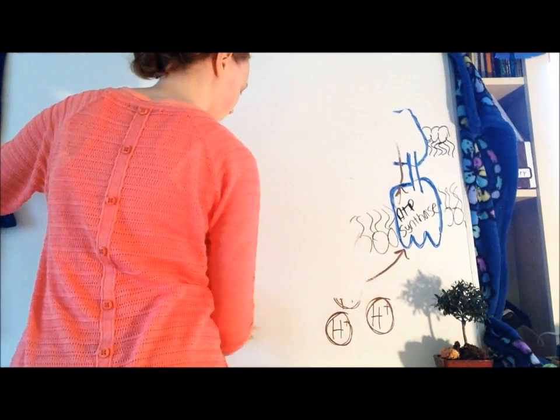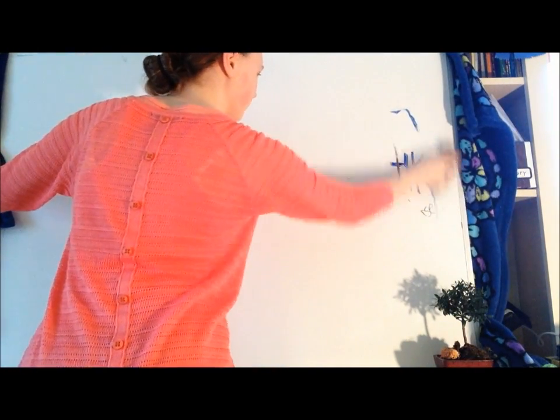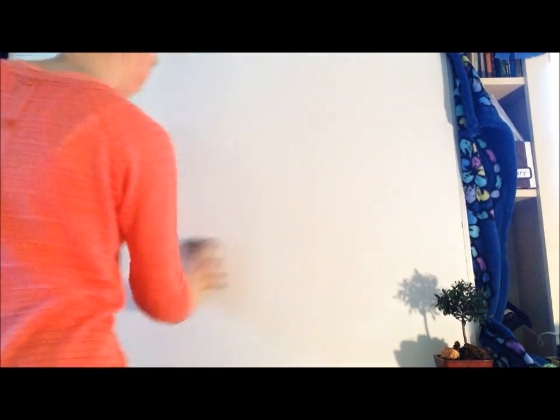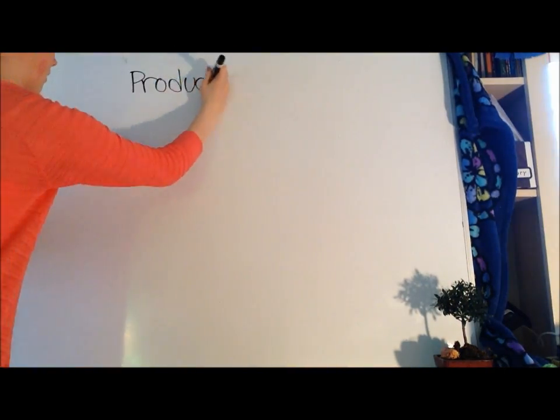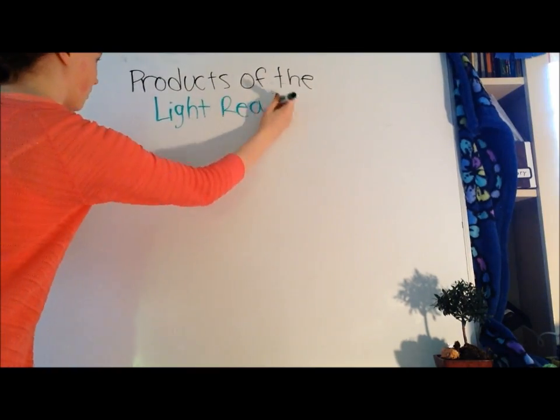Now, if photosynthesis were a book, that was chapter one. Let's go on to chapter two, the Calvin cycle. But first, let's go over the products of the light reactions.